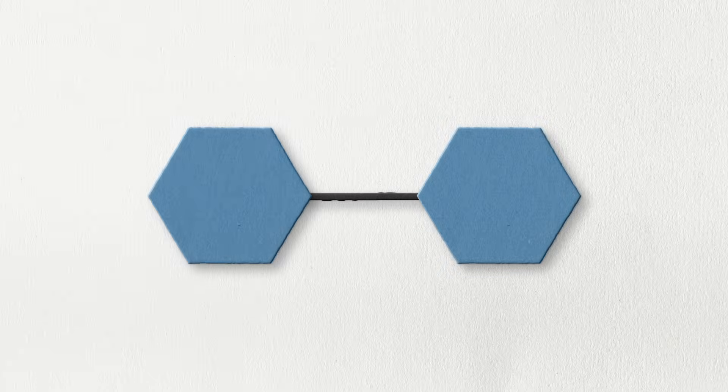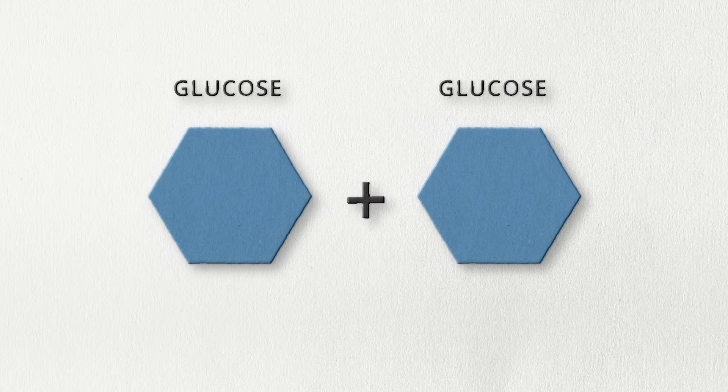Another common example from plants is the production of maltose, or malt sugar. In this reaction, two glucose molecules combine to form maltose.